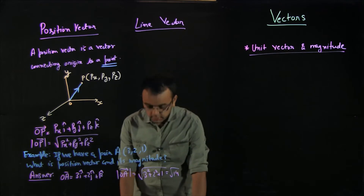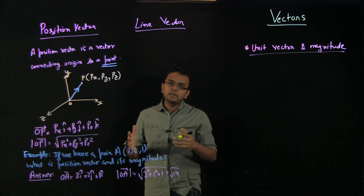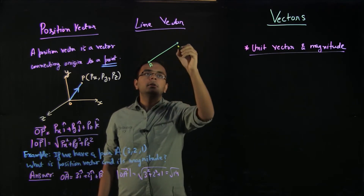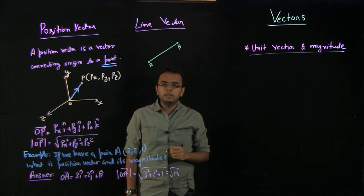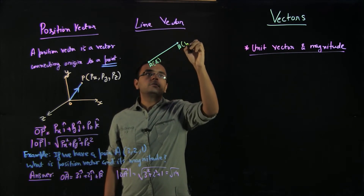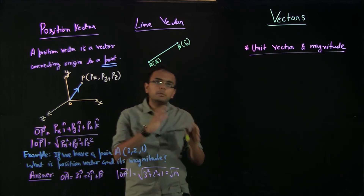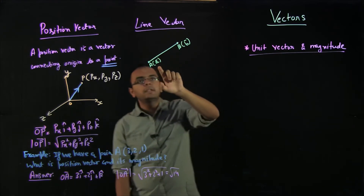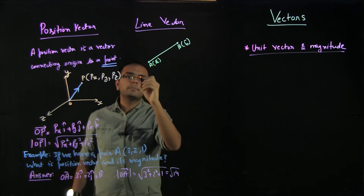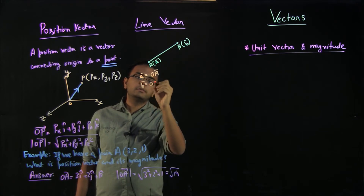Now let us move to a new type of vector called the line vector. Position vector is for a point and line vector is for a line — as simple as that. If you have a line connecting two points A and B, with small a-vector here and small b-vector here, then a-vector is for point A and b-vector is for point B. Whenever you see something like this in brackets for a point, it refers to the position vector. In other words, a-vector is nothing but OA vector and b-vector is nothing but OB vector.